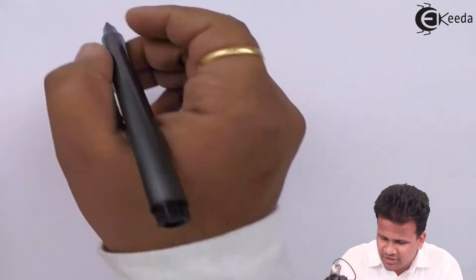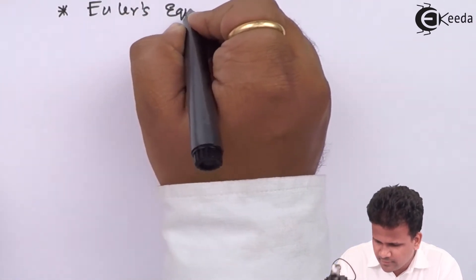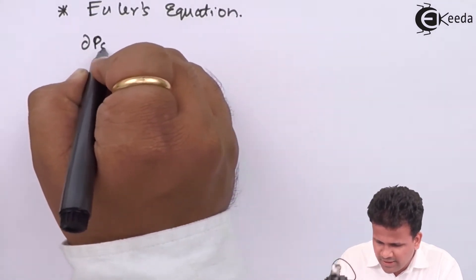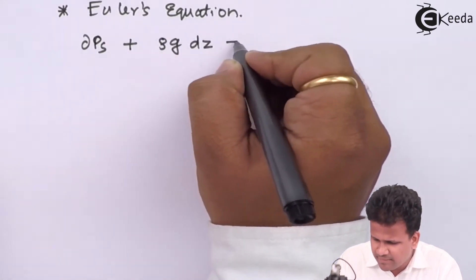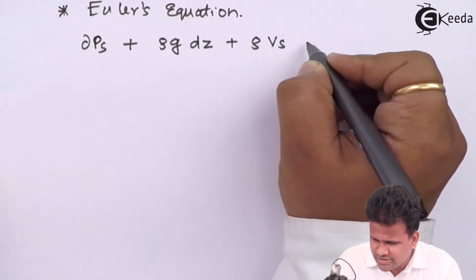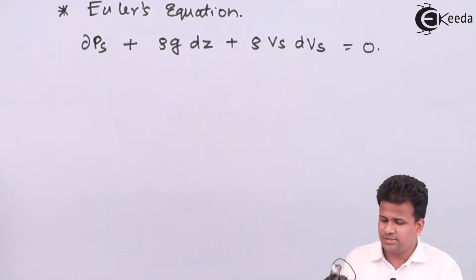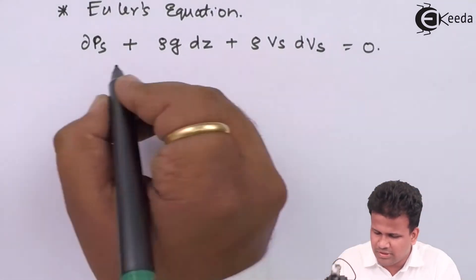For the derivation of Bernoulli's equation from Euler's equation, let us analyze the Euler's equation first. We have already derived the Euler's equation as: dP + ρg·dz + ρV·dV = 0.